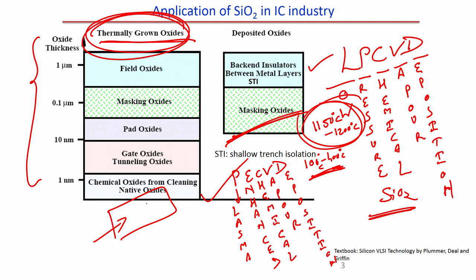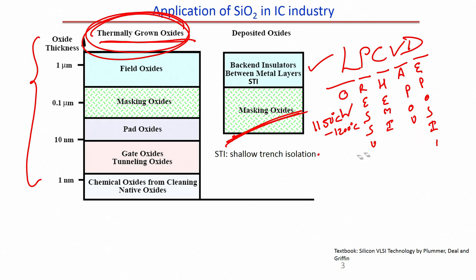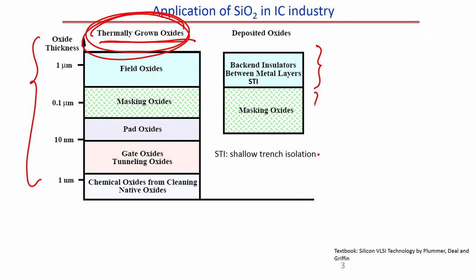But if you have aluminum and you want to grow oxide on top of it, you cannot use 1150 or 1200 degrees centigrade — aluminum will melt. So there are two types of oxidation: one is when we grow it, another is when we deposit it. When grown, applications include field oxide, masking oxide, pad oxide, gate oxide or tunneling oxide, and chemical native oxides. When deposited, applications include back-end insulators between metal layers and masking oxides.